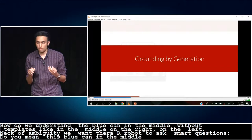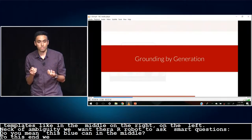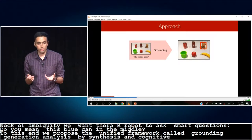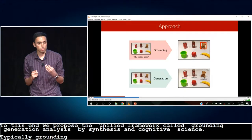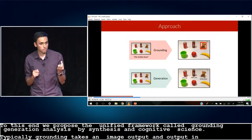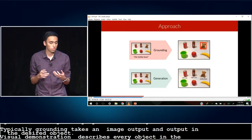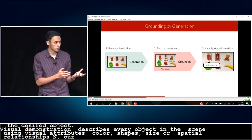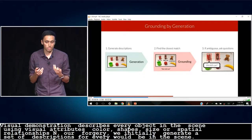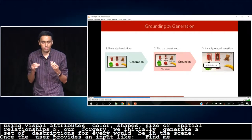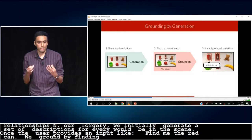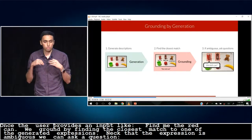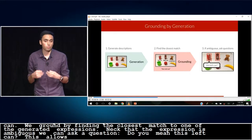To this end, we propose a unified framework called grounding by generation, which is broadly influenced by analysis by synthesis in cognitive science. Typically, visual grounding involves taking an image and an expression as input and outputting the location of the desired object. Visual generation involves taking an image and describing every object in the scene using visual attributes like color, shape, size, or spatial relationships. In our framework, we initially generate a set of descriptions for every object in the scene. And once the user provides an input, like find me the red can, we ground by finding the closest match to one of the generated expressions. In the case that the expression is ambiguous, we can use the same generated expression to ask a question, like do you mean this left can? And this allows us to solicit additional information and communicate what the robot understands about the world.